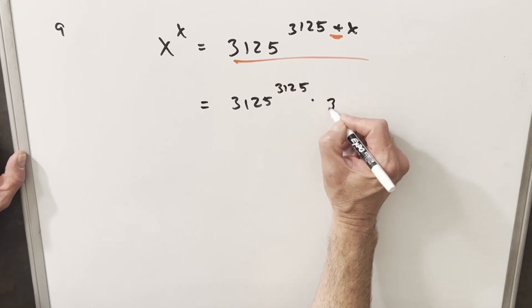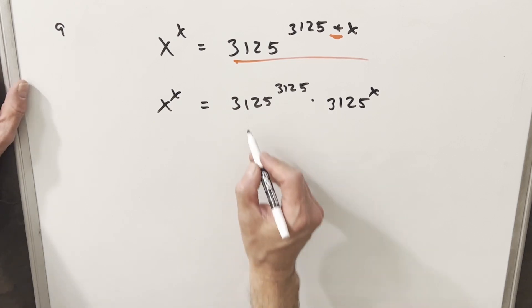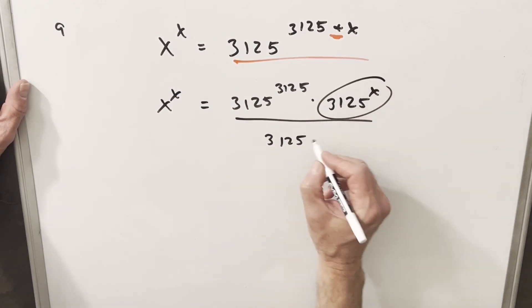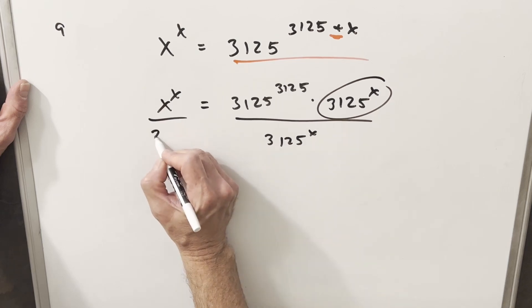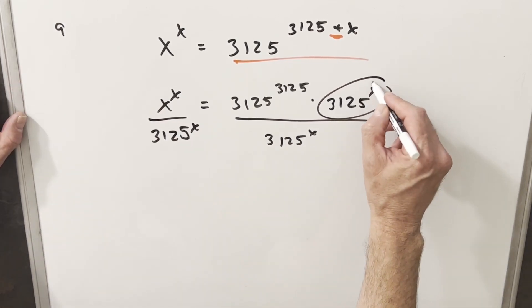And what that's going to allow me to do is just divide this piece off on both sides so that on the right side it's going to cancel.